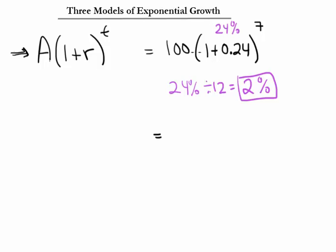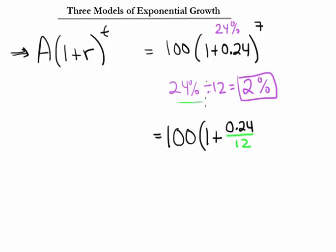We can rewrite the compound interest formula using this new idea of compounding in successively smaller intervals. Instead of compounding every year, we do it every month: (1 + 0.24/12) raised to the power of 7 × 12. This is how you calculate 2% interest every month, which equals 24% interest every year, over 7 years.